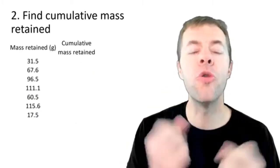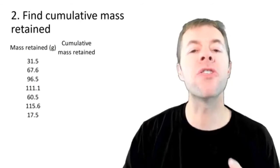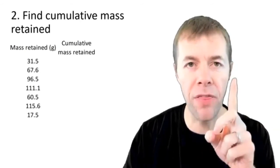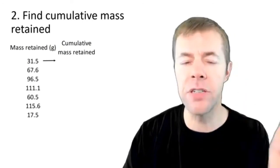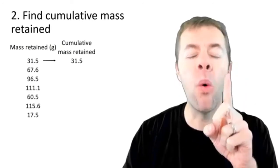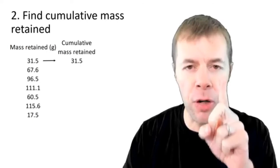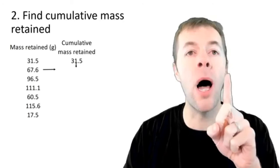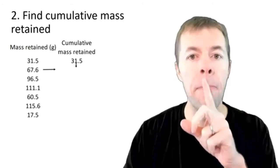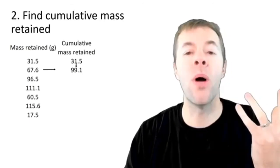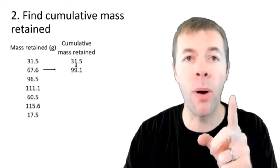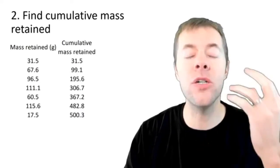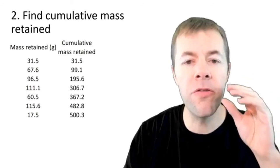Now let's talk about calculating the cumulative mass retained. First step, we're just going to bring over the amount of mass retained on the highest sieve. 31.5 just comes over in the first column. Now we're going to add that 31.5 to the mass retained on the next sieve. So the next number is just the sum of 67.6 plus 31.5, which is 99.1. And then we continue this process again and again until we have all of our cumulative mass retained.